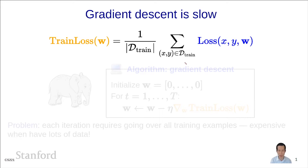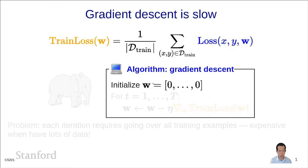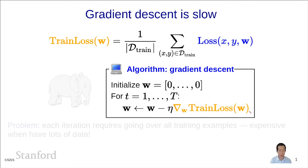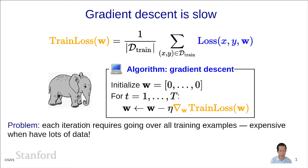Gradient descent works as follows: we initialize the weight vector to zero and then repeat t times, taking the old weight vector and subtracting out the step size times the gradient over the training loss. This gradient is actually an average over the gradients of the per-example losses. If you have a dataset with a million examples, computing a single gradient involves looping over all one million examples just to get a single update. This is why gradient descent is slow — it requires going through all the training examples just to make one update.